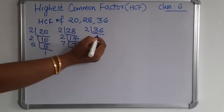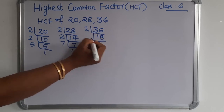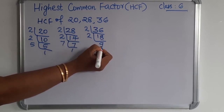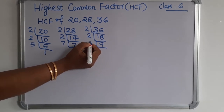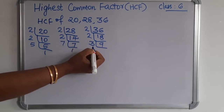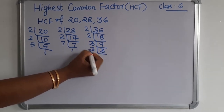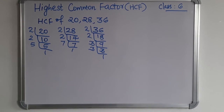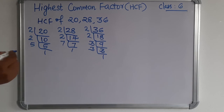Thirty-six is also an even number. So we can take two — two eighteens are thirty-six. Two nines are eighteen. Nine is an odd number, so which number we want to write here? Three. Three threes are nine. Again three, one. So these are the prime factorizations of twenty, twenty-eight, and thirty-six. Now we can write this as the product.